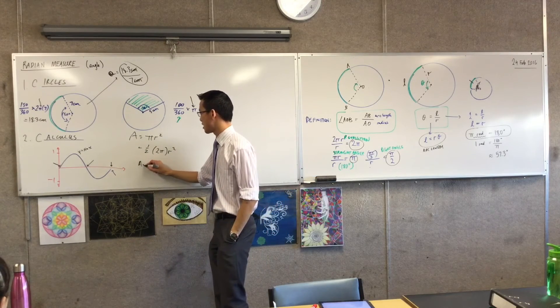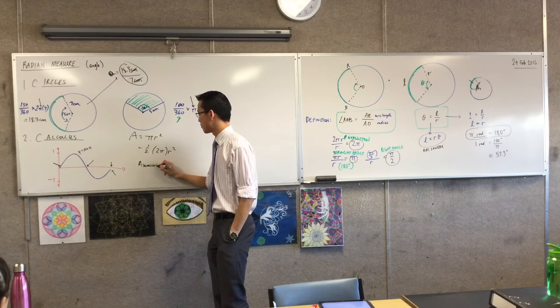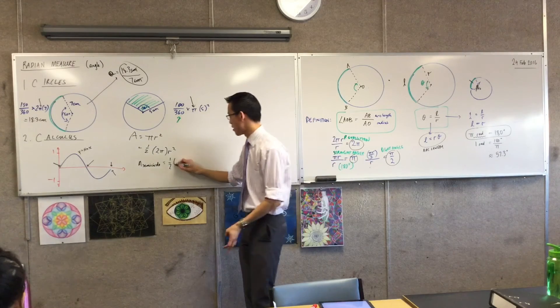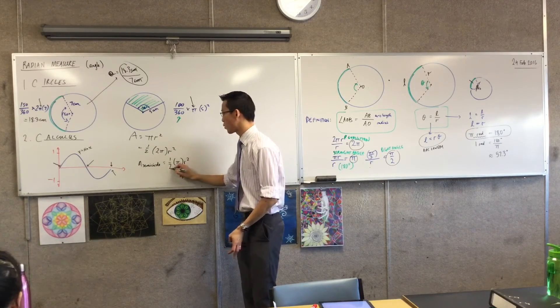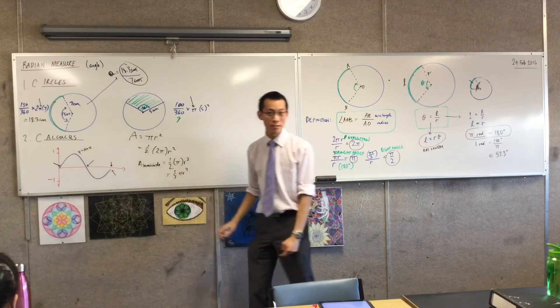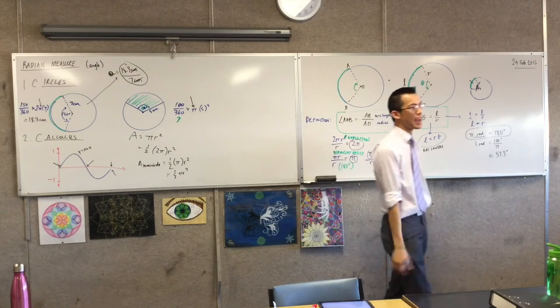So I would say the area of the semicircle is equal to half times whatever that angle is, pi times r squared, right? Which of course is half pi r squared, which you knew already, right?